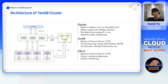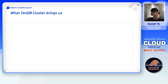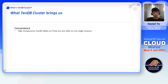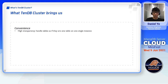Now you may be wondering, why should you use it? There are a lot of cool benefits that come with our TenDB cluster's architecture. The first one is about convenience. TenDB cluster offers great transparency in design. When using TenDB cluster, you don't need to write a complex query specifying all the locations of the shards to create a table. Instead, you can just do it like you're doing it on a single instance. The sharding is automatically done by the cluster and leaves you no worries.